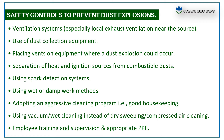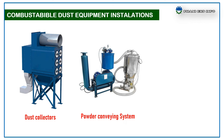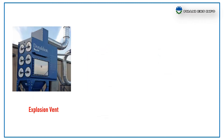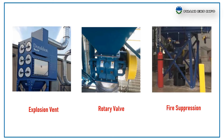Let us see some of the equipment installed at work areas to control dust explosions: dust collectors, powder conveying systems, double wall hoppers, explosion vents, rotary valves, and fire suppression systems.